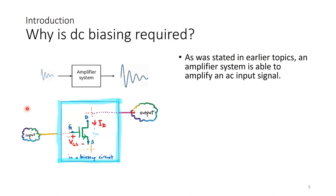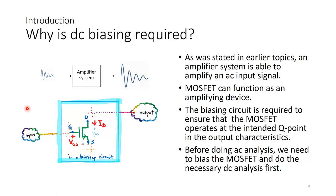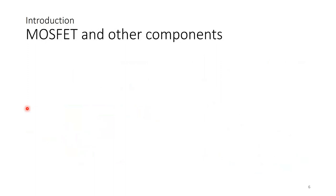Why is DC biasing required? As stated in earlier topics, an amplifier system is able to amplify an AC input signal, and MOSFET can function as an amplifying device. The approach to small signal AC analysis is through superposition — we do the DC biasing analysis first, then go into AC analysis. So the biasing circuit is required to ensure that the MOSFET operates at the intended Q point in the output characteristics. Before doing AC analysis, we need to bias the MOSFET and do the necessary DC analysis first.